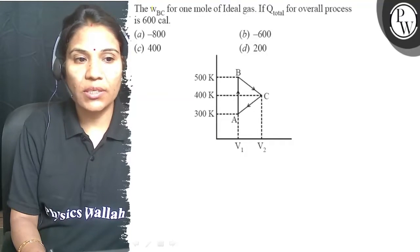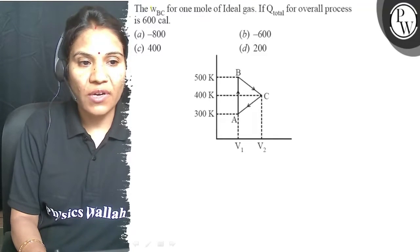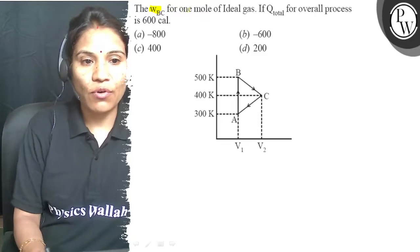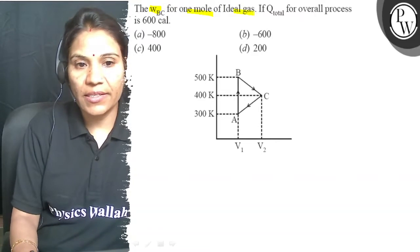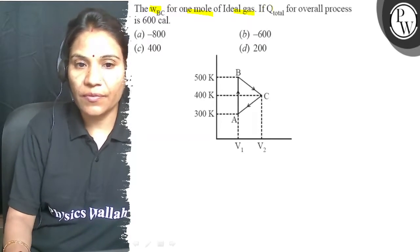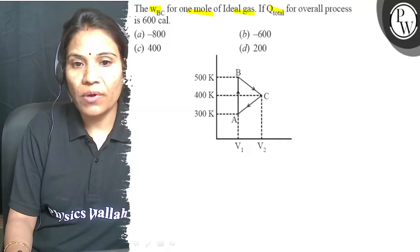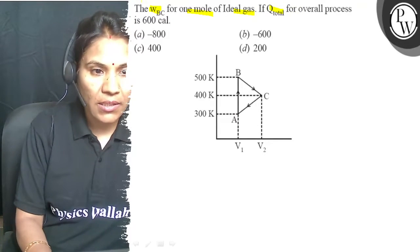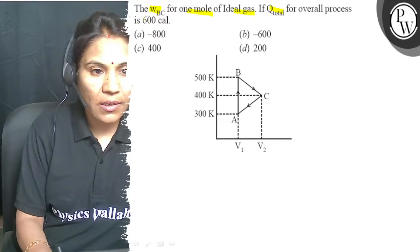Hello, let's see this question. In this question, the work WVC for one mole of ideal gas is asked if Q total for overall process is 600 calories.